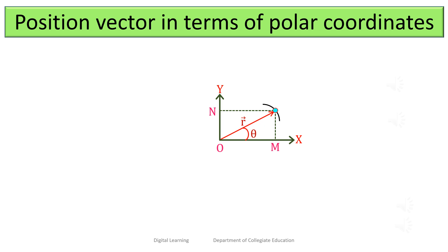When a particle moves in a plane, it can be described by the parameters r and θ, where r is the magnitude of the position vector and θ is the angle made by the position vector with respect to the x-axis. Therefore, it is suitable to express the position vector in terms of polar coordinates instead of Cartesian coordinates.